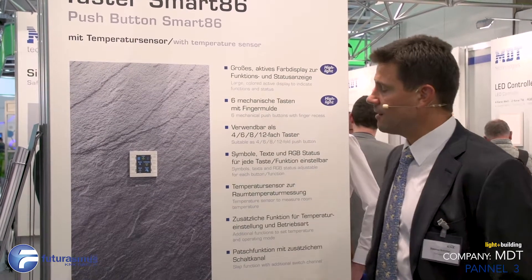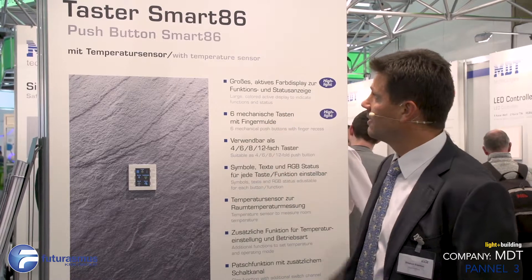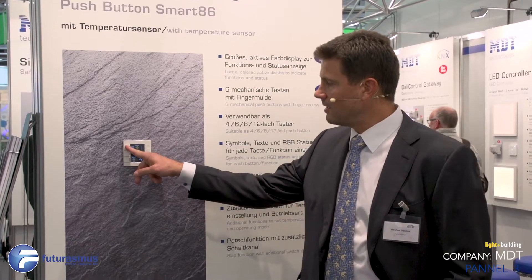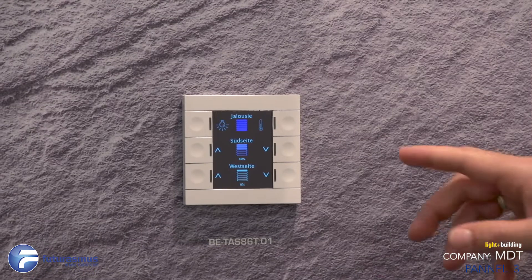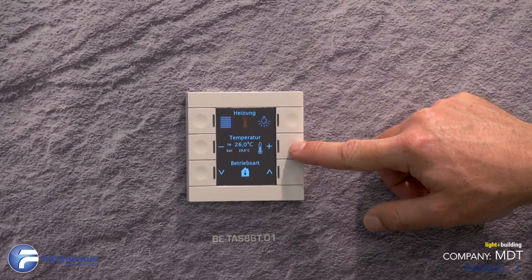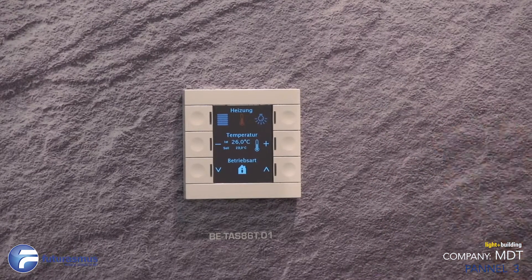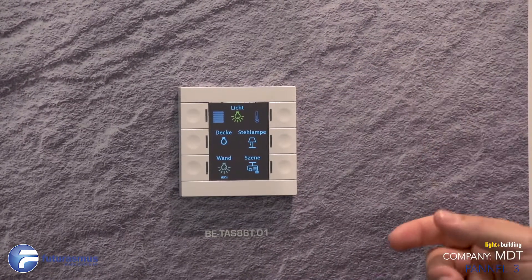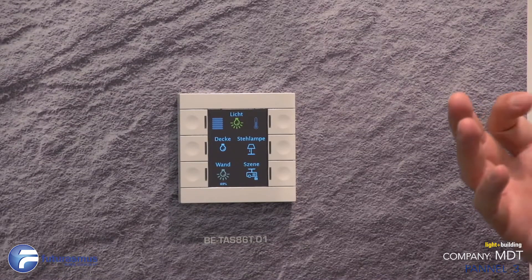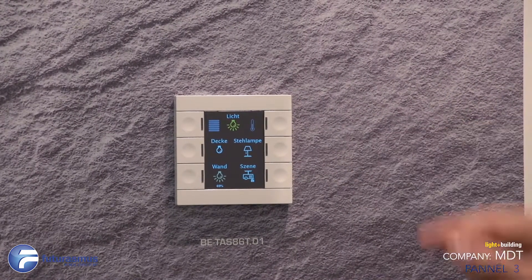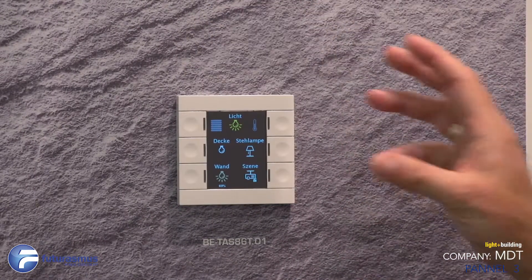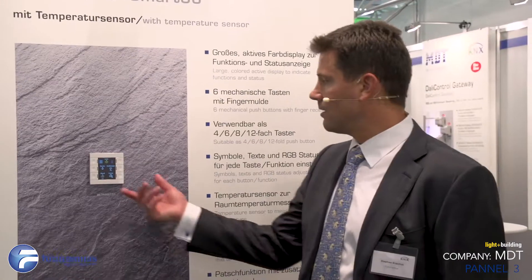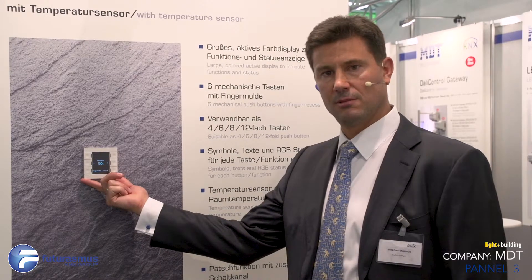Here is a new and very interesting product — the Smart 86. With this one, we have the possibility not only to have the touch feeling but also physical buttons. Some customers want this feature; they want a physical button they can press and feel the click. This is the exact same feature set as the previous one, but with new firmware that enables up to 12 functions.